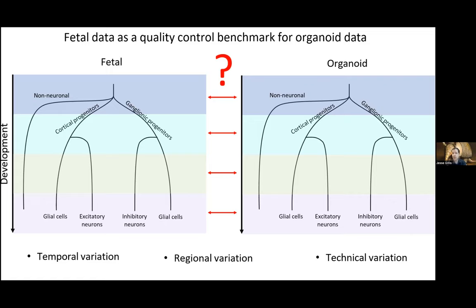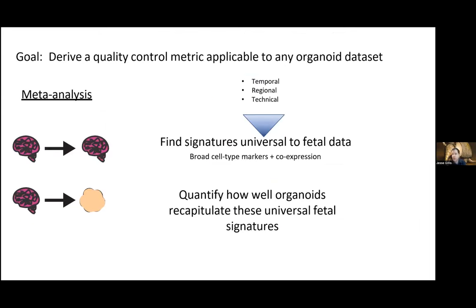A lot of this is really challenging to assess because organoid procedures vary strongly from lab to lab and it's hard to get consistent methods. Everyone will claim their data is fantastic, so that doesn't help. The field as a whole is held back by the lack of an actionable metric for characterizing the translational efficacy of these models. The goal of this project is to derive a quality control metric — humble sounding, but grand in its aspiration — to say whether these organoids resemble real biological systems.